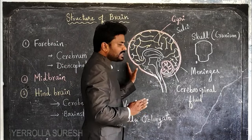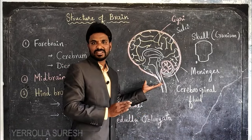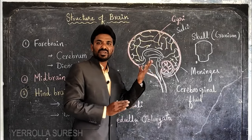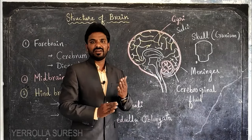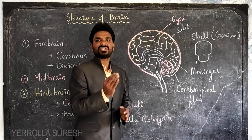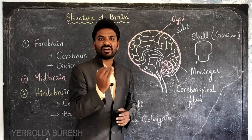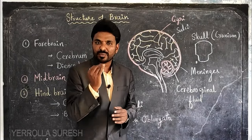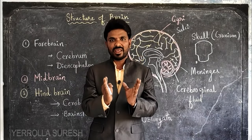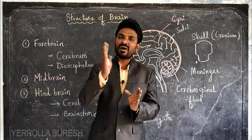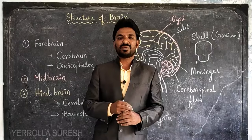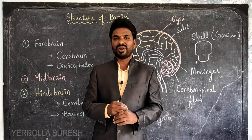So the brain is located and protected by different structures. The first is the skull, the second are the meninges, and the third is the cerebrospinal fluid.